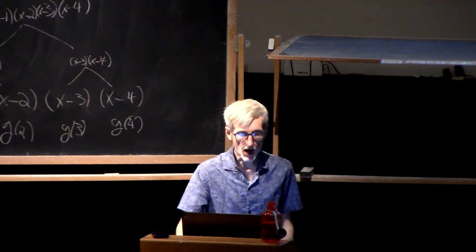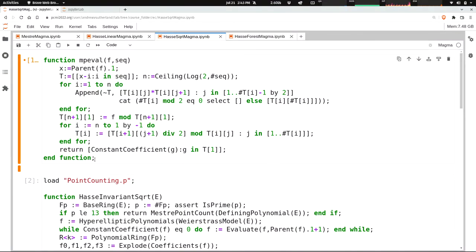So this top function is implementing the multipoint evaluation approach. This first loop here is computing the product tree. It looks a little more complicated than it needs to because I'm not assuming that the number of points I'm wanting to evaluate is a convenient power of two.